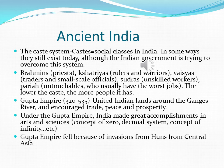The Gupta Empire: when you think of India for the Regents, thematic questions will most likely ask you about the Gupta Empire. It flourished from the year 320 until the year 535. They united Indian lands around the Ganges River and encouraged trade with other places around the world — mostly spices and other products — bringing peace and prosperity. Under the Gupta Empire, India made great accomplishments in arts, science, and math, including the concept of zero, the decimal system, and the concept of infinity. The Gupta Empire fell because of invasions from Huns from Central Asia.